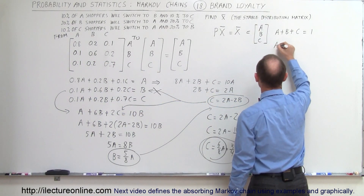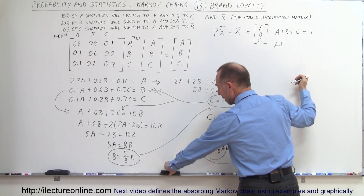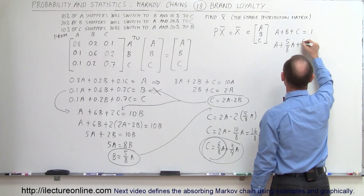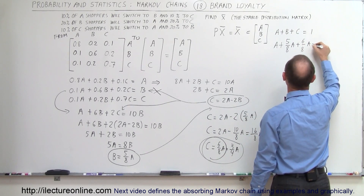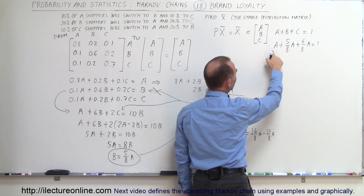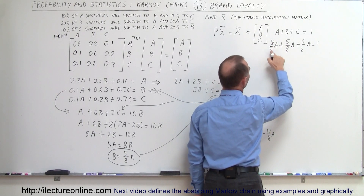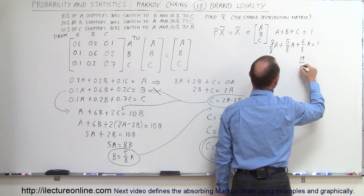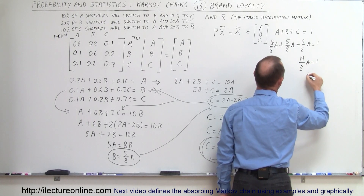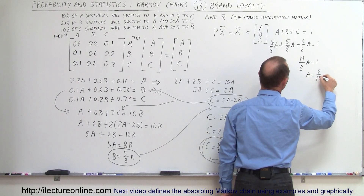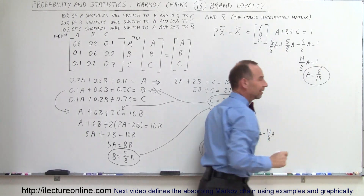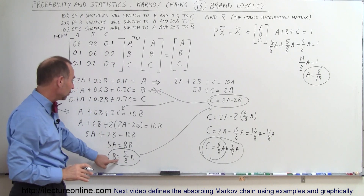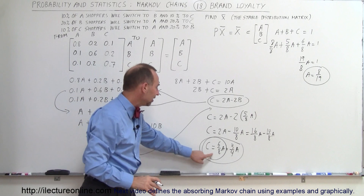Now substituting into A + B + C = 1: A + (5/8)A + (6/8)A = 1, which is (8/8)A + (5/8)A + (6/8)A = (19/8)A = 1, so A = 8/19. After all that work we've found A.